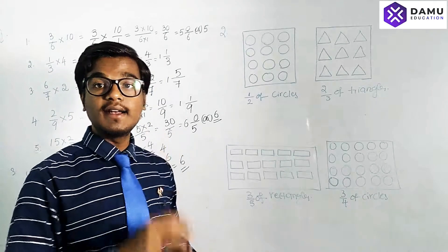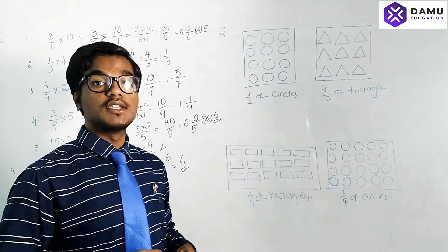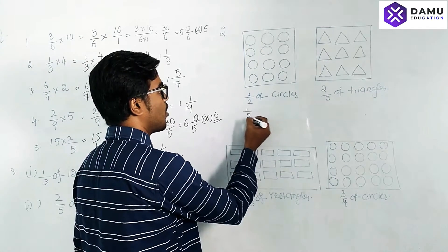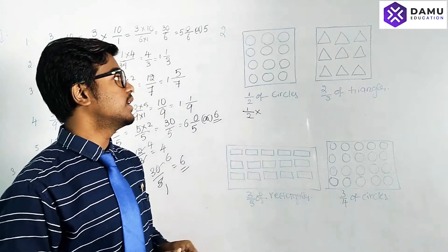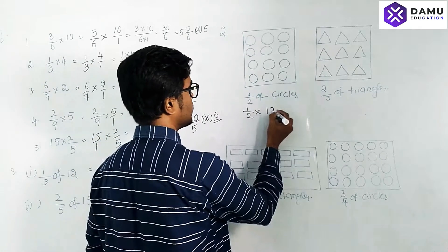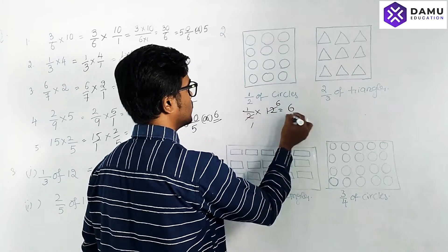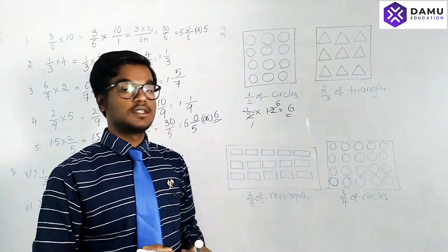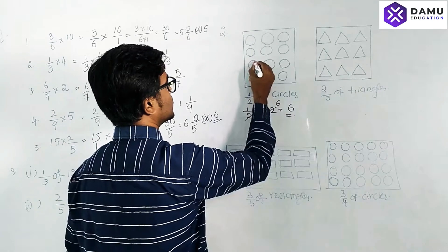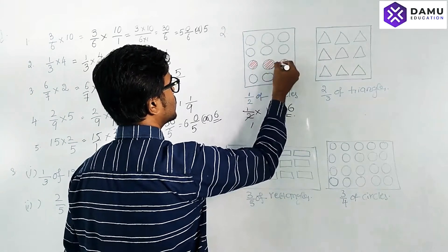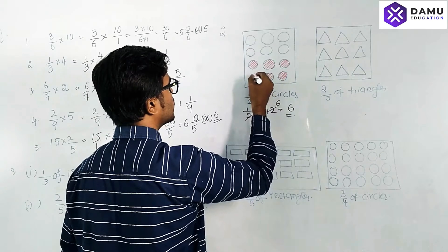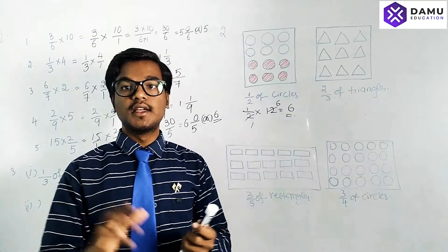For the second question, we are asked to shade parts of given shapes. For 1/2 of circles: 'of' means multiplication. There are 3 rows of 4 circles, giving 12 circles total. 1/2 of 12 = 6, so we need to shade 6 circles. We can shade the first six or any six — fill them completely.